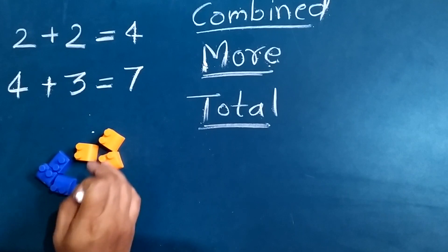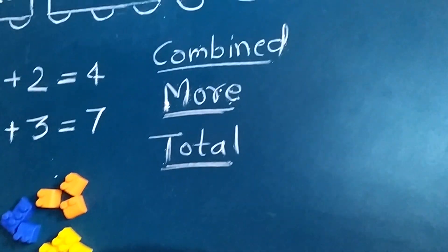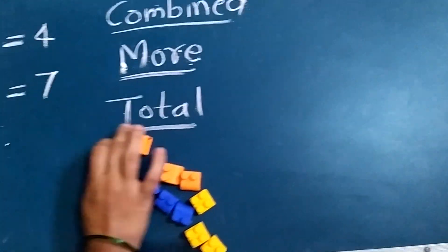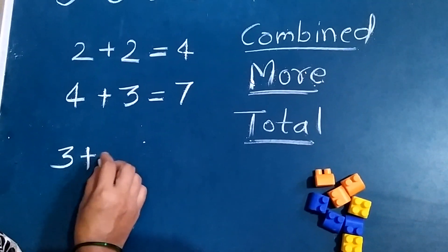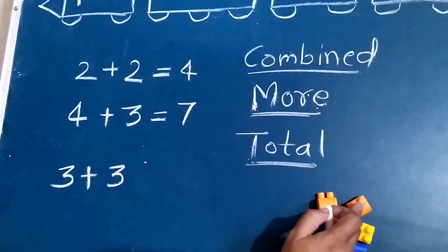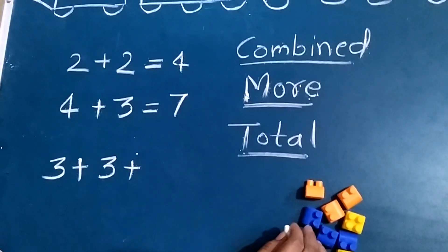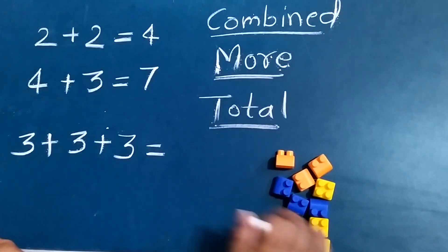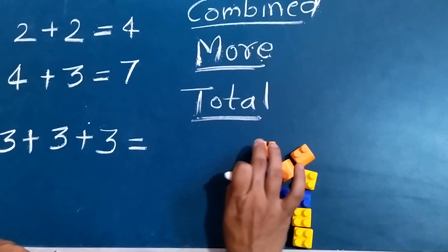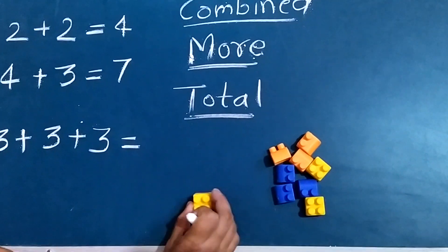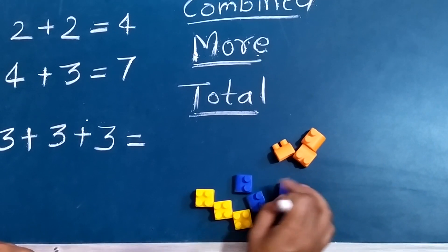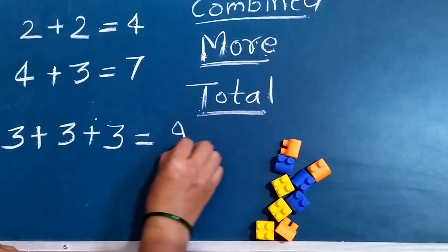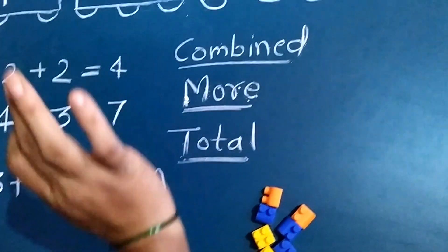All together, how many blocks do I have altogether? We have three orange blocks, three blue blocks, and three yellow blocks. All together: 1, 2, 3, 4, 5, 6, 7, 8, 9. I have 9 blocks all together.